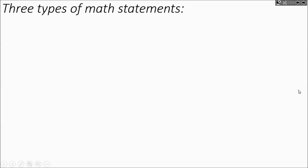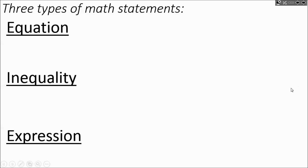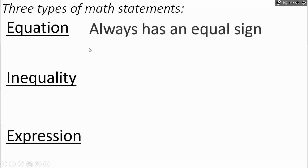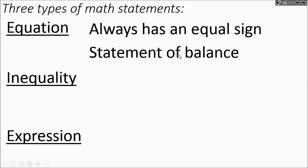There are three types of math statements: equation, inequality, and expression. The real definition of an equation is that it always has an equal sign — it's a statement of balance. An example is 5n plus 3 equals negative 3. If you visualize a seesaw, one side would be balanced with the other.